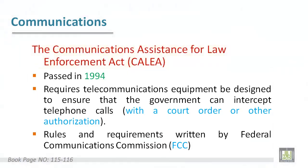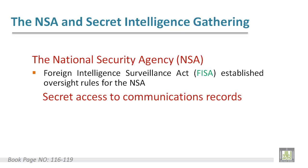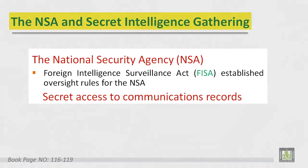The Communications Assistance for Law Enforcement Act (CALEA) requires that telecommunications equipment be designed to ensure that the government can intercept telephone calls. Then the Foreign Intelligence Surveillance Act established oversight rules for the National Security Agency, which has secret access to communications.